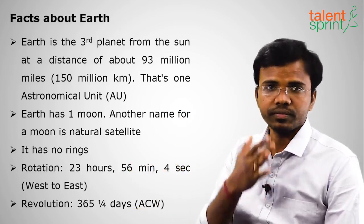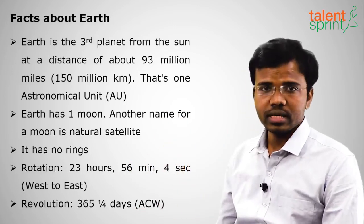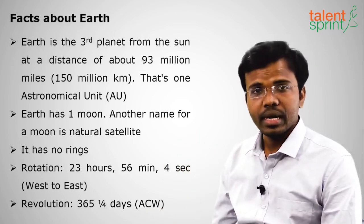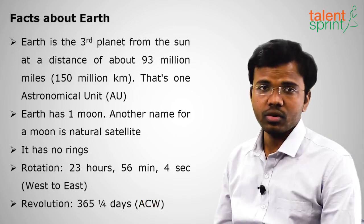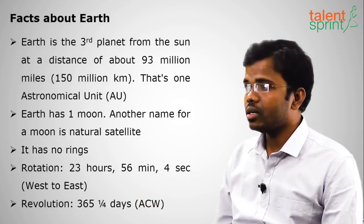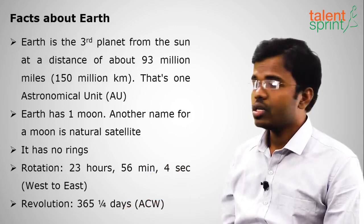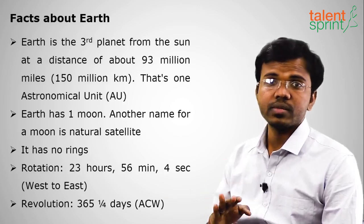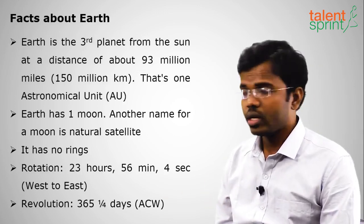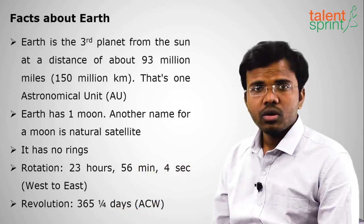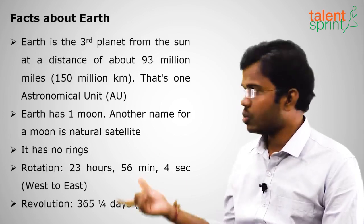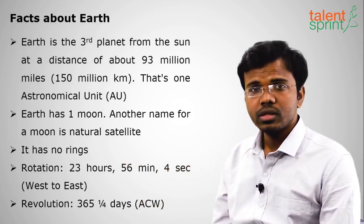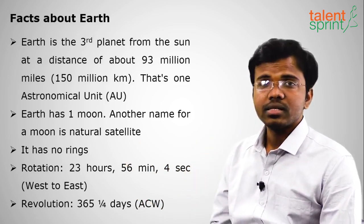Earth's moon is its natural satellite — it revolves around the planet. Earth does not have any rings. The time taken for one rotation by Earth is exactly 23 hours, 56 minutes, and 4 seconds — this was asked in the SSC CGL examination. The direction of rotation is from west to east, which is why the sun rises in the east and sets in the west.